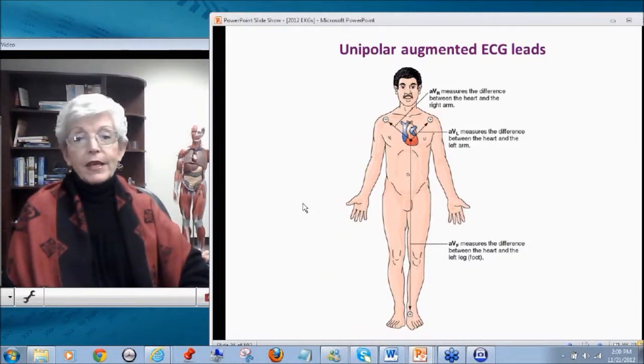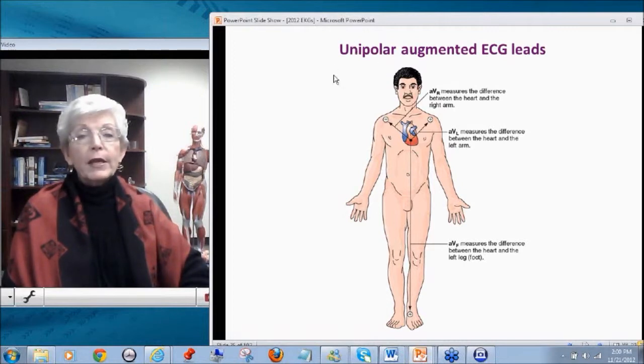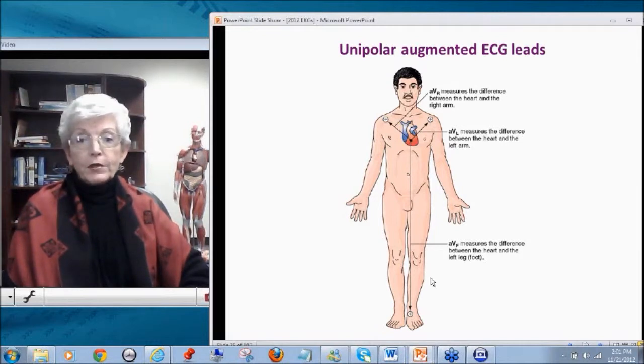Besides the limb leads, we have three unipolar augmented leads. And they are augmented vector right, where it reads from the middle of the heart just to the right arm, augmented vector left, which leads from the middle of the heart to the left arm, and augmented vector foot or leg, which reads from the middle of the heart to the left leg.